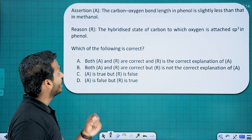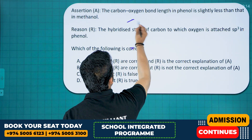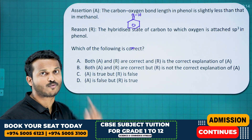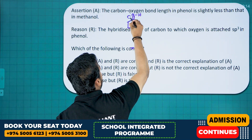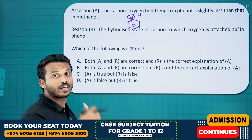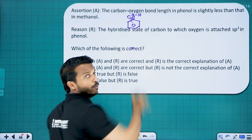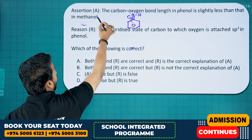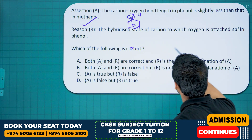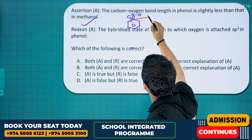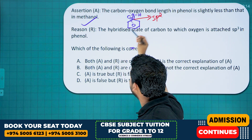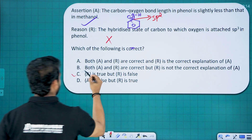Assertion: The carbon-oxygen bond length in phenol is slightly less than that of methanol. This is correct — in phenol (benzene with OH), the oxygen and carbon have partial double bond character due to resonance, making the bond shorter and stronger. Reason: The hybridization of the carbon to which oxygen is attached is SP3 — this is false; benzene carbons are SP2 hybridized. So assertion is correct, reason is false. Option C.